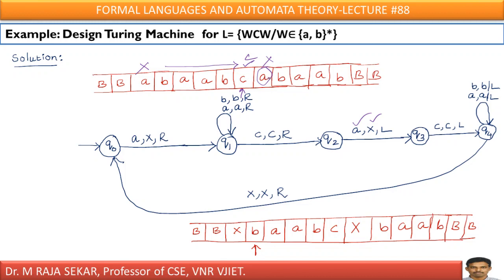I am constructing the Turing Machine for acceptable strings only. If it is a non-acceptable string, the Turing Machine will simply halt at a non-final state. Now I must move left. After replacing A with X, C must be replaced by C and I move left. My duty is to go back until I reach the capital X. In between X and C, I may get A's or B's — I must blindly replace B by B and A by A, and keep moving left until I reach capital X.